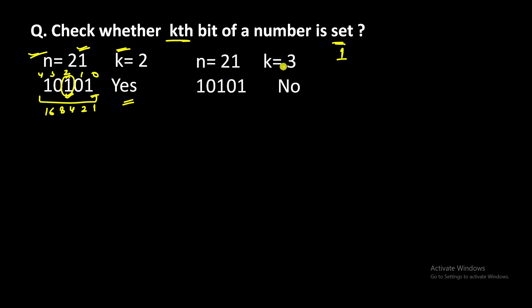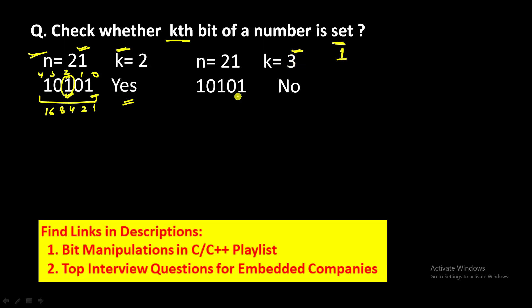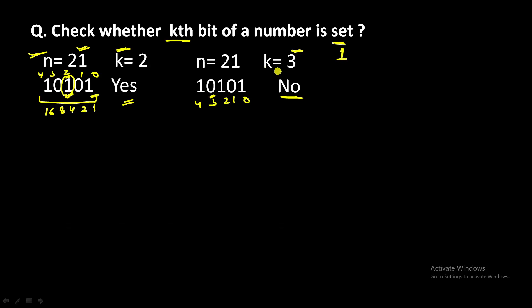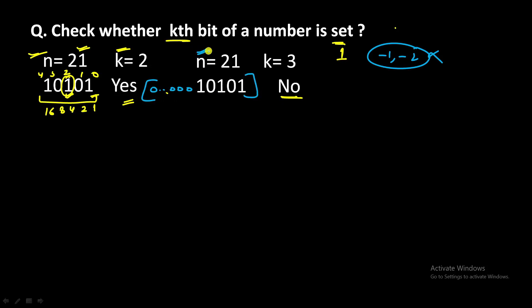For the same number if k equal to 3, the third bit counting 0, 1, 2, 3 is 0, so it is not set. You can be asked any value of k. We also assume k will be valid — no negative values. For k equal to 7, the 7th bit of 21 is also 0, so it is not set. You should clarify with the interviewer whether bits are 0-indexed or 1-indexed.